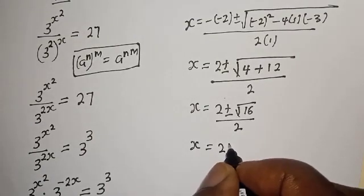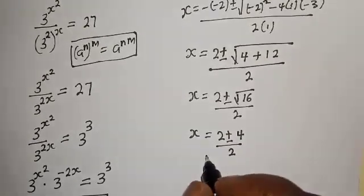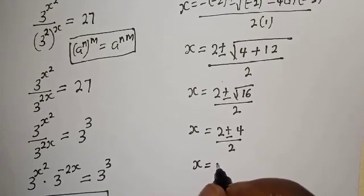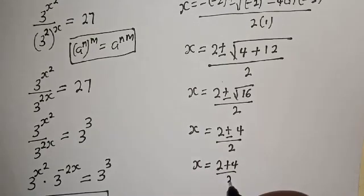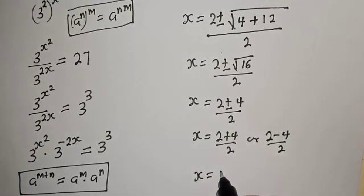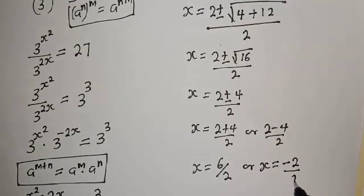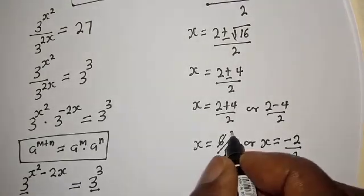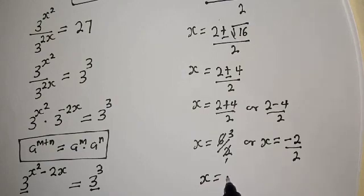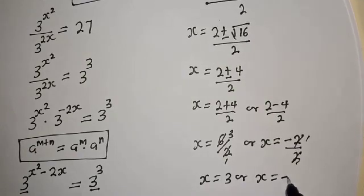So s is equal to 2 plus or minus square root of 16, all over 2. Therefore s equals 2 plus 4 over 2, giving s equals 3, or s equals 2 minus 4 over 2, giving s equals minus 1.